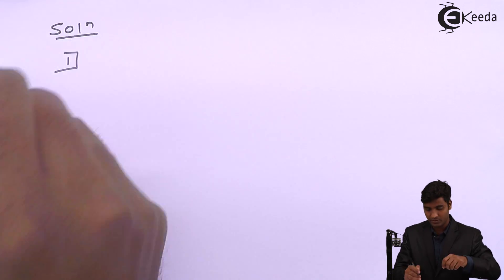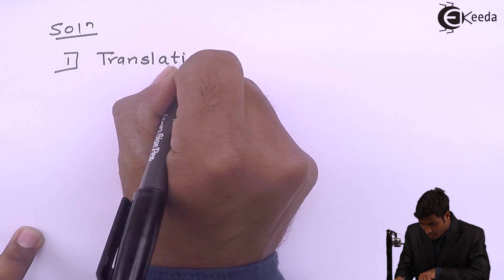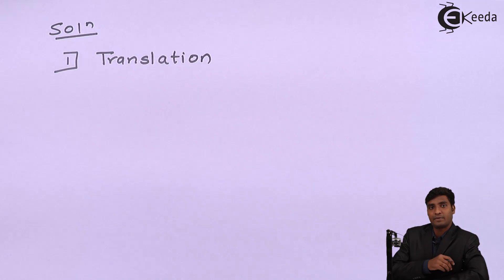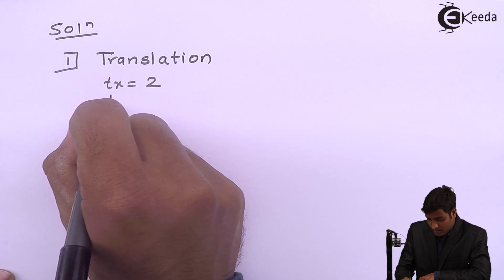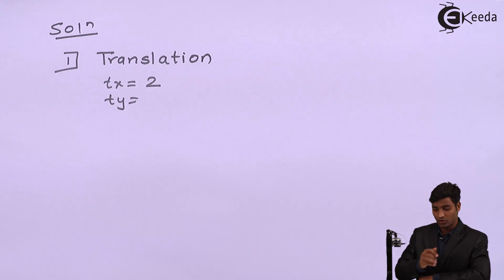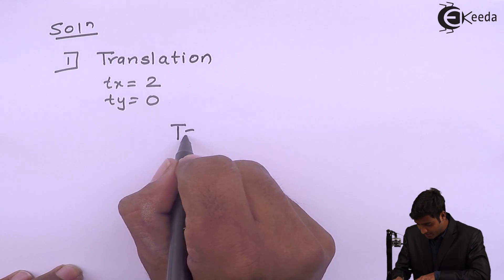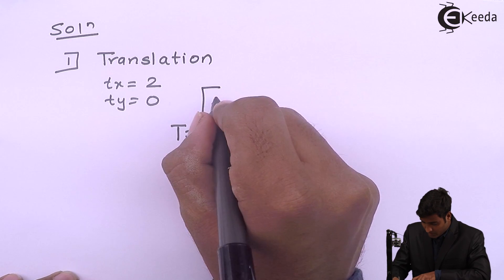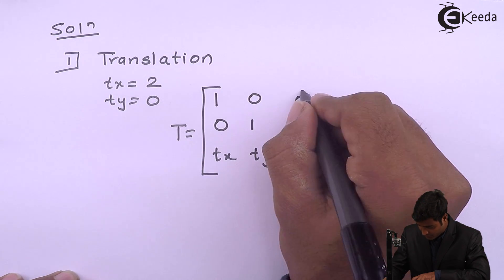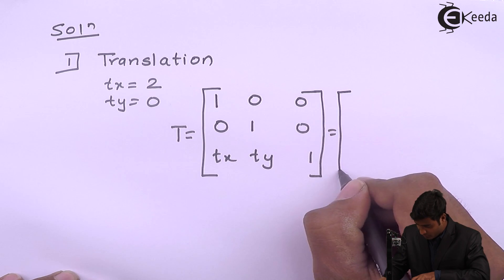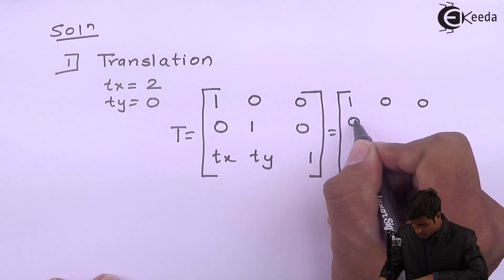First, the triangle has been translated, so I will perform the translation transformation. Translation has been done in the x direction with tx=2, and since no translation is done in the y direction, ty=0. The standard translation matrix T is: [1, 0, 0 / 0, 1, 0 / tx, ty, 1]. Replacing tx=2 and ty=0, I get the translation matrix.